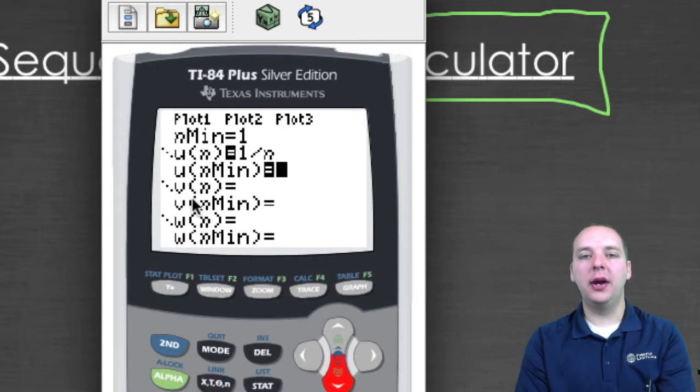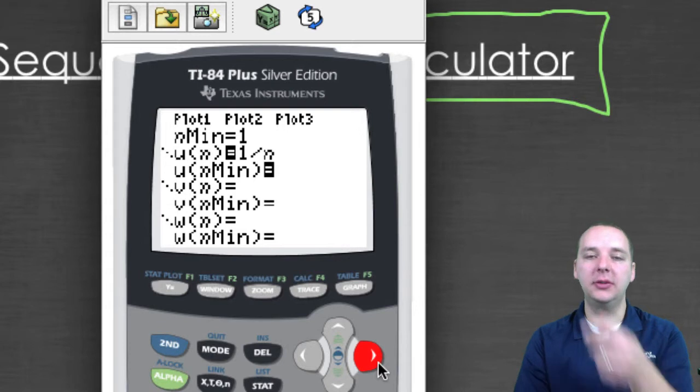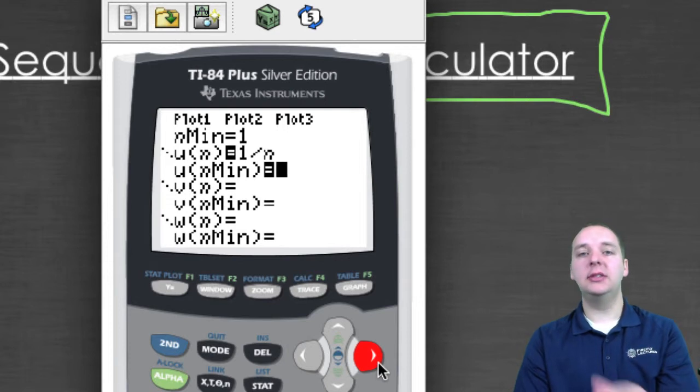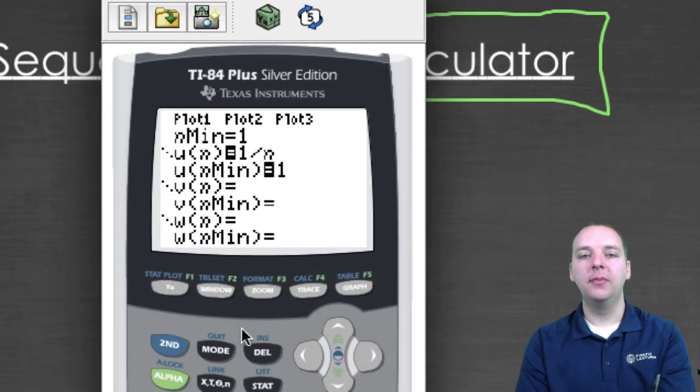Now it also asks you for an n minimum, and as you well know, sequences can start anywhere. Most sequences start at 1, but they can start at 0 a lot of times. Sometimes we want sequences to start at 5 or 7 or something like that. So just tell it where you want it to start, in our case we'll just start ours at 1.